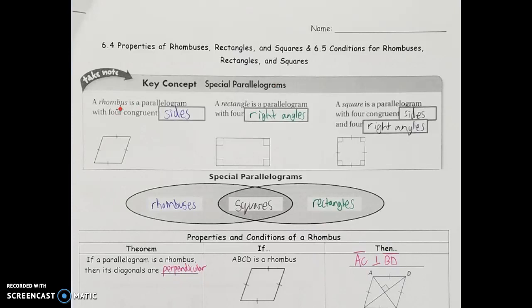The first type of special parallelogram is a rhombus — that's a parallelogram with four sides that are congruent. The next type is a rectangle, which is a parallelogram with four right angles. So a rectangle deals with angles, a rhombus deals with the sides. And if you have both, that's called a square — a parallelogram with four congruent sides and four right angles.